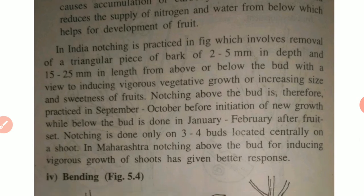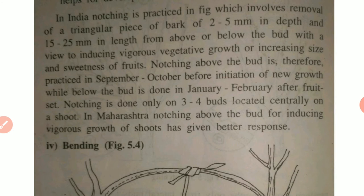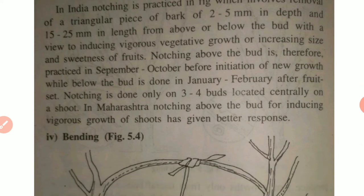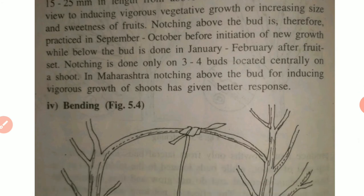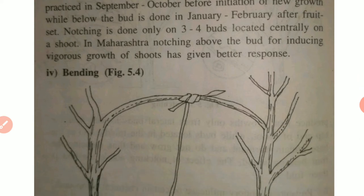In India, notching is practiced in fig, involving removal of a triangular piece of bark of 2 to 5 millimeters in depth and 15 to 25 millimeters in length from above or below the bud, with a view to inducing vigorous growth or increasing size and sweetness of fruits. Notching above the bud is practiced in September and October before initiation of new growth, while notching below the bud is done in January and February after fruiting. Notching is done on only three to four buds located centrally on a shoot. In Maharashtra, notching above the bud for inducing vigorous growth of shoots has given better response.